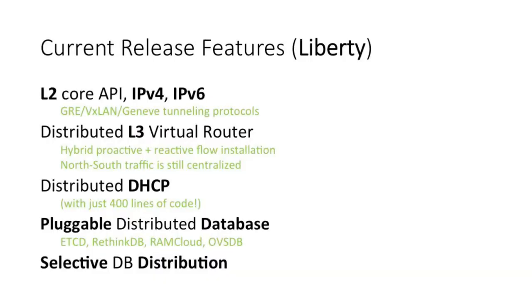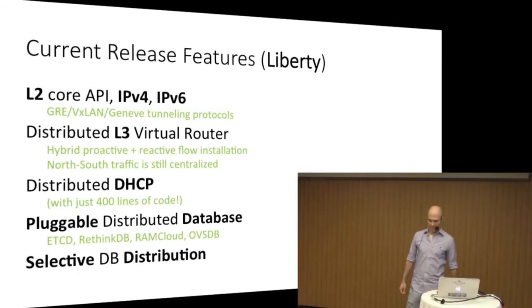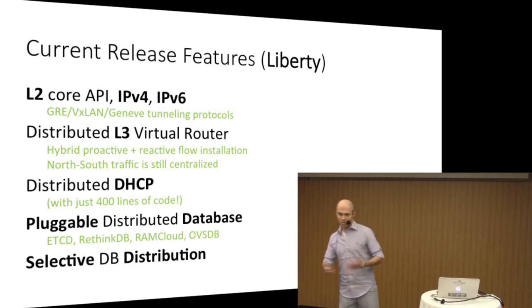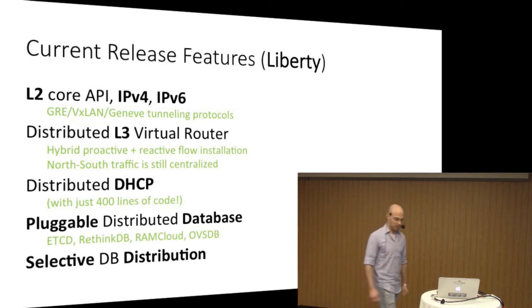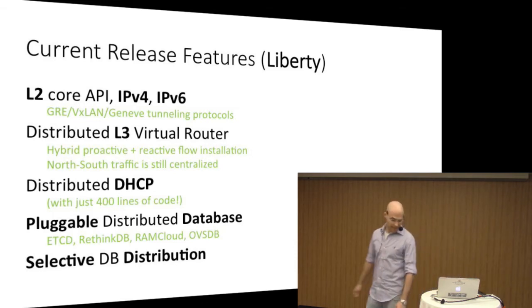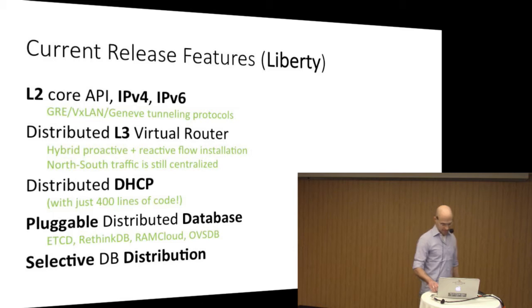The other part are the Dragon Flow applications, which translate the topology and the network policy from this database to OpenFlow flows in the local compute node. For Liberty, we have L2 supported with all the common tunneling encapsulations. We have distributed layer 3, IPv4 and IPv6. We implemented the DVR in OVS flows — no namespaces or additional agents rather than the local controller. We have a distributed DHCP application and a pluggable database.